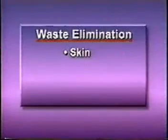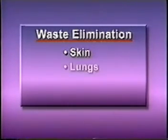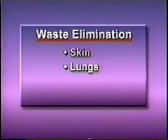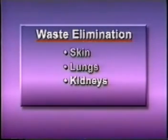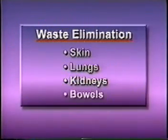Waste products are eliminated through one of four different ways. The first way is through the skin — waste is removed through perspiration, also called sweat. It's also removed through the lungs; as we breathe out, we are removing waste with each breath we exhale. A third way is through the kidneys via urine. And finally, the bowel removes waste in the form of a bowel movement, also called feces, stool, or defecation — which simply means the process of removing waste material from the body.